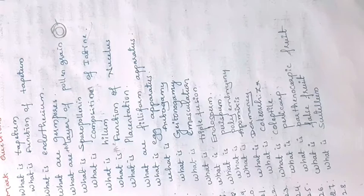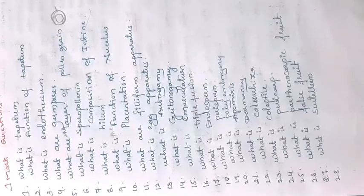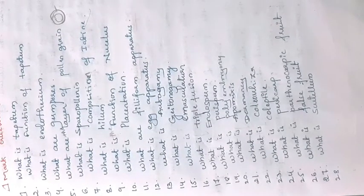What is placentation? Placentation is the arrangement of ovules in the ovary. The arrangement of ovules in the ovary is called placentation.